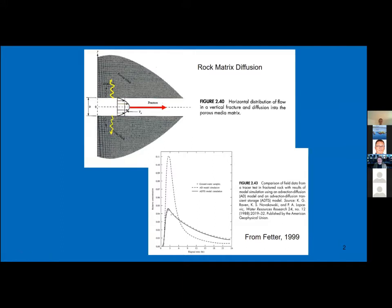Everything discussed so far has been about micron scale, maybe up to a few millimeter scale. Rock matrix diffusion is the process whereby if you have advection in a fracture, even if you don't have fluid flux, you can have diffusive loss of a solute into the surrounding rock matrix. In a porous medium that makes sense; in a fractured medium it also makes sense — perpendicular to the direction of transport you get solute running down the concentration gradient into the surrounding matrix.